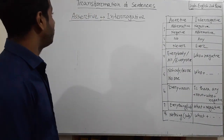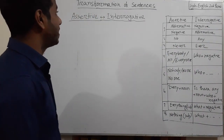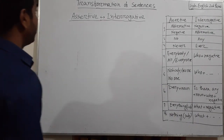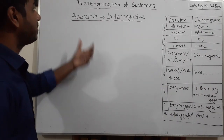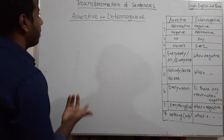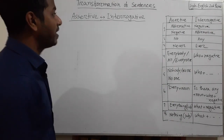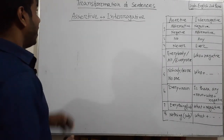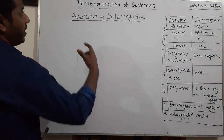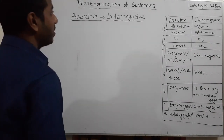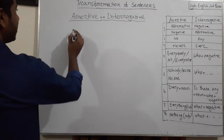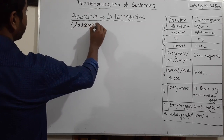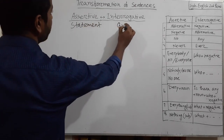Dear students, first of all, we have to know what is an assertive sentence and what is an interrogative sentence. Assertive sentence denotes all the statements describing incident, feeling, opinion, history, etc. And interrogative sentence actually asks a question. So assertive sentence has another name: statement sentence. Interrogative sentence is a question.